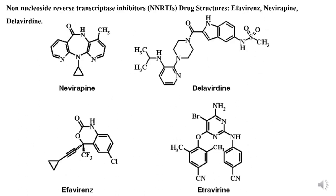These are the structures of drugs under the category of non-nucleoside reverse transcriptase inhibitors (NNRTIs). Examples: efavirenz, nevirapine, delavirdine.